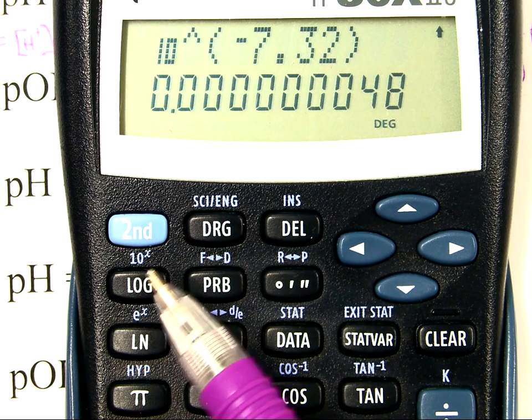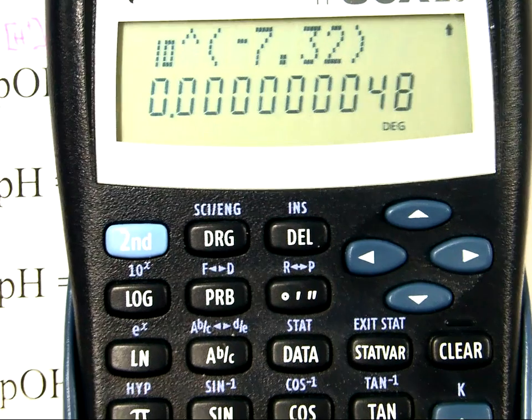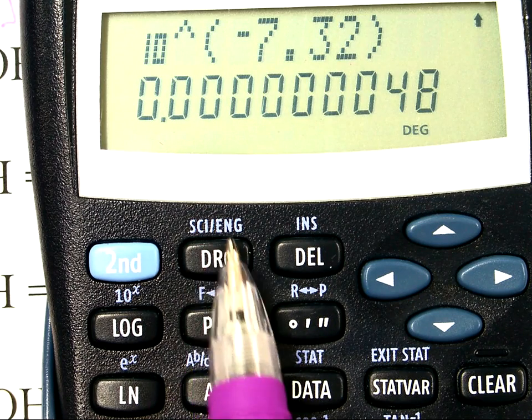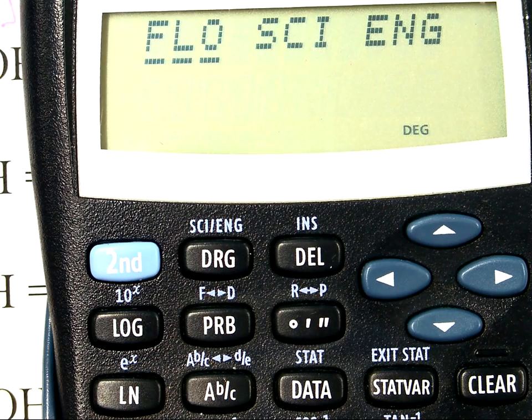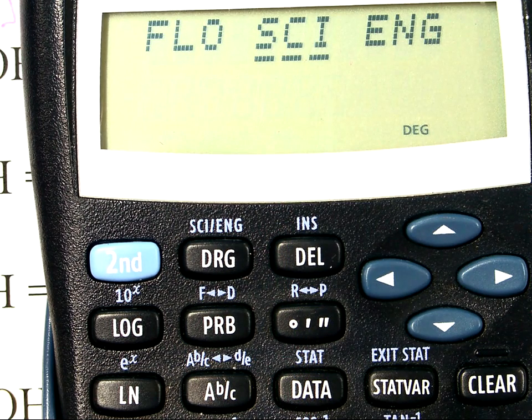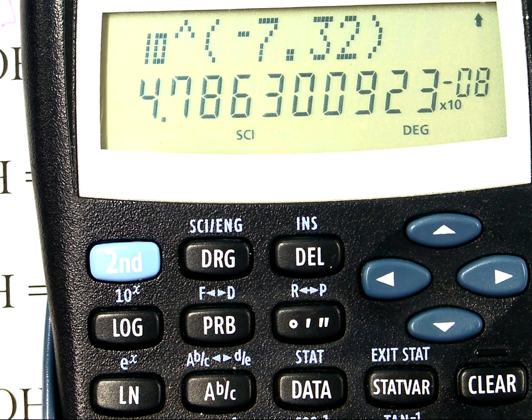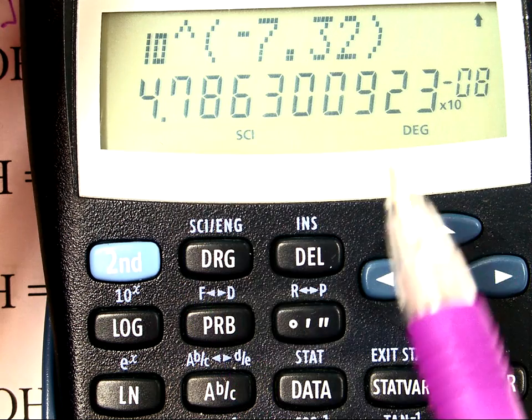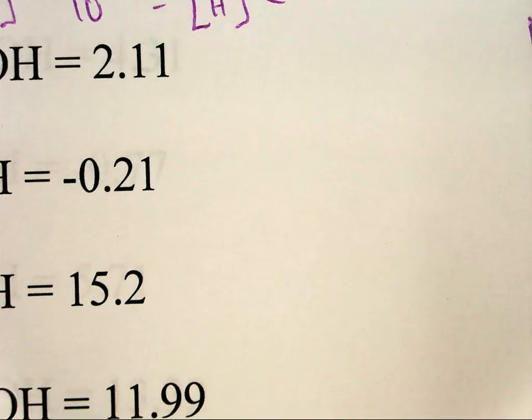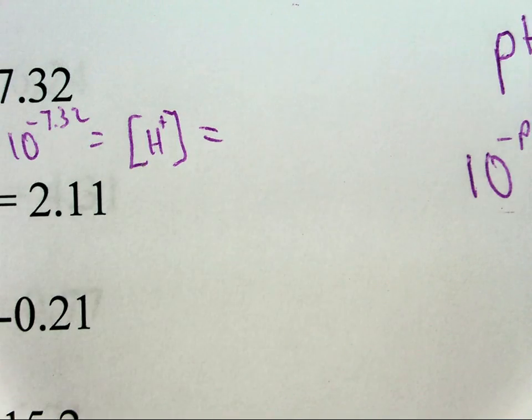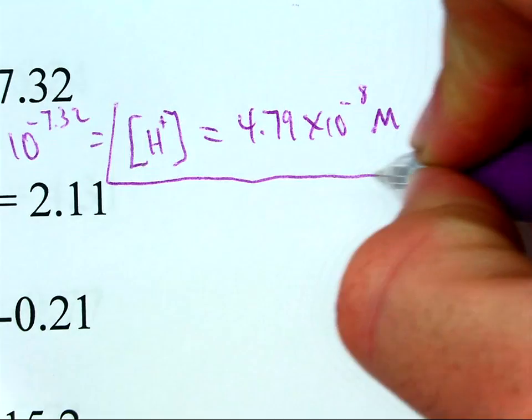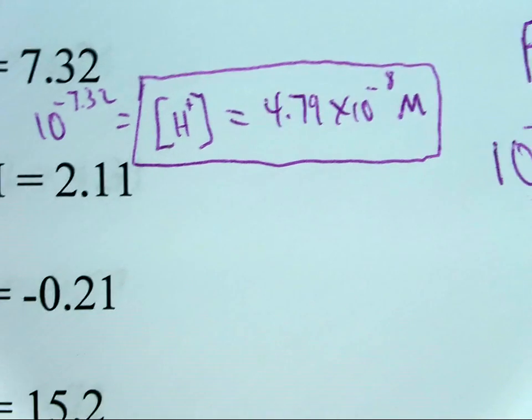So, you need to put it in scientific notation mode to show scientific notation. Now, on this particular model, it's right here. It's a second function again. Different models, it might be in different places. But, when I do it here, I get this option. Currently, floating decimal is just a regular number. Scientific notation is what this is. So, I go over, select it, press enter. And, now it shows the exact same answer, but as scientific notation. Let's see, 7.32, three sig figs. So, three sig figs here. 4.79 times 10 to the negative 8th moles per liter. So, let's put that on here. 4.79 times 10 to the negative 8th moles per liter. And, I'll box that answer. Okay, and that's the first one.